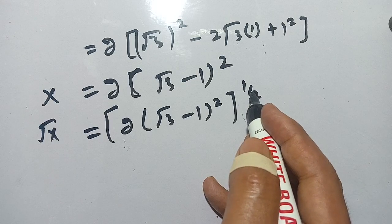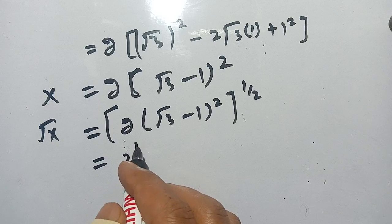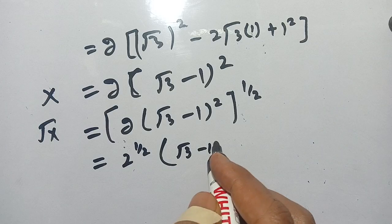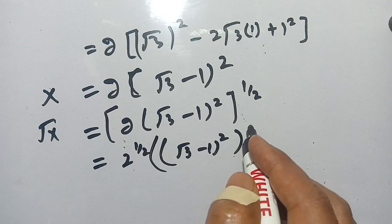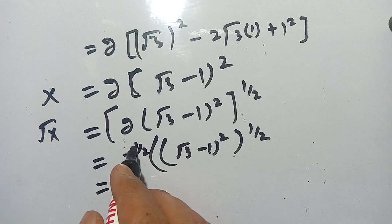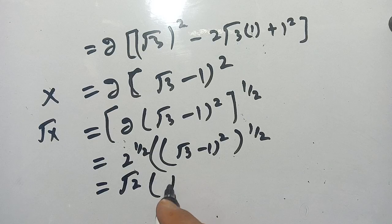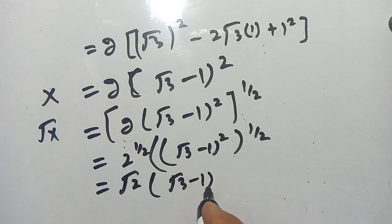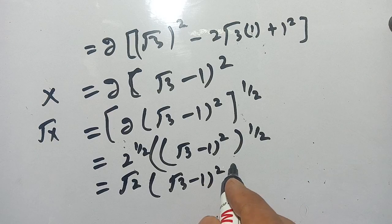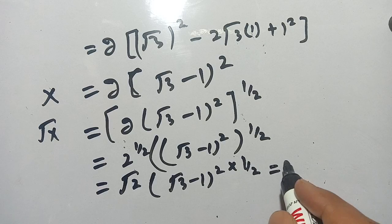We apply the power of 1/2 to each individual term: 2 to the power of 1/2, as well as (square root 3 minus 1) squared raised to the power 1/2. The interior power multiplies: 2 times 1/2 equals 1. So that simplifies nicely.